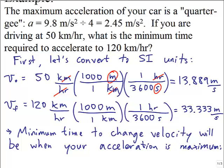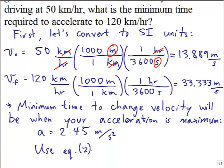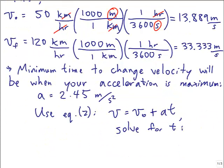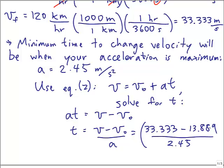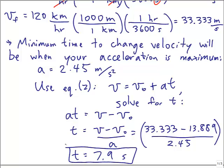Using equation 2: v equals v-sub-0 plus at, solving for t gives t equals (v minus v-sub-0) over a. That's (33.333 minus 13.889) divided by 2.45, which equals 7.9 seconds.